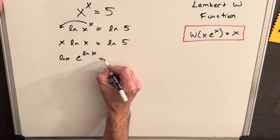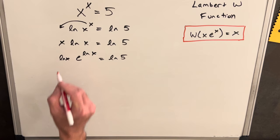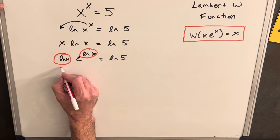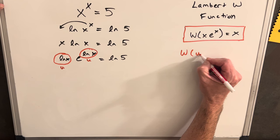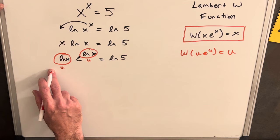And then we notice something important that we have the same thing here and the same thing here. If you wanted, you could call this u or y or whatever. And then you'd have u e to the u and then that's the same thing as u. But however you want to do it, we can now use the Lambert W function and pull this value out.